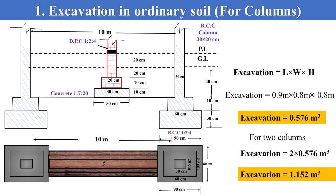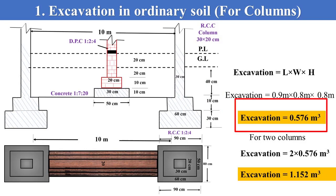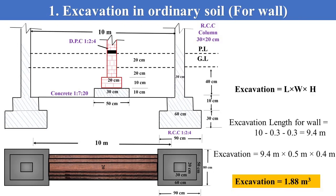To find the excavation of two columns, consider the top view of the column and multiply the length with width and the depth of excavation — from the ground level to the base of the footing. The quantity of excavation becomes 0.576 cubic meter for one column. Multiply it by two, so the total quantity of excavation for two columns becomes 1.152 cubic meter.